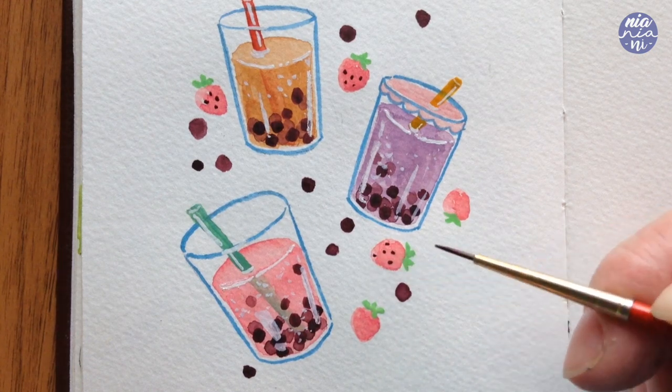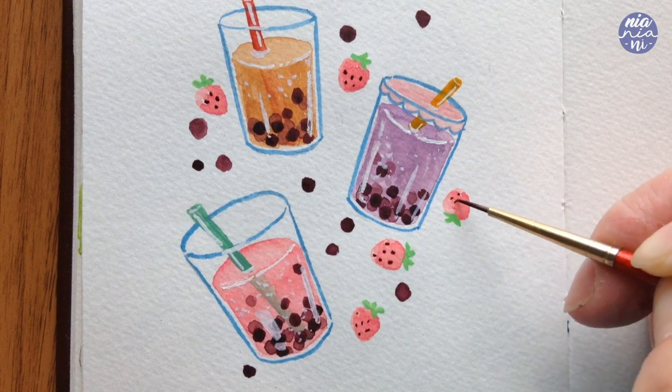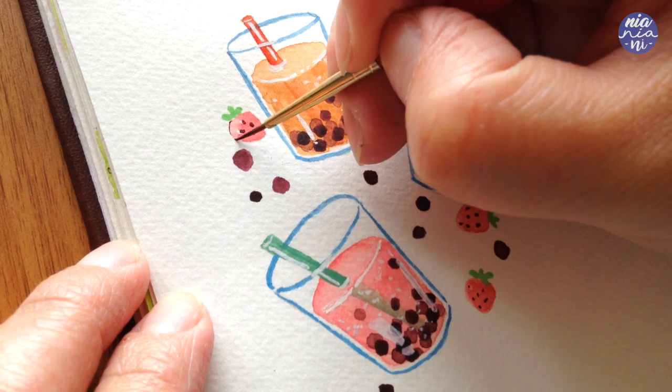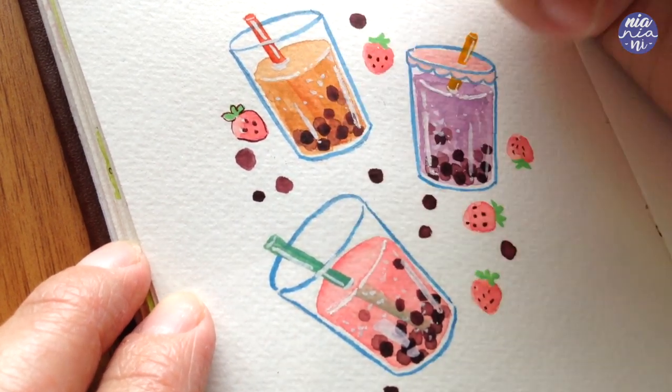After I started painting the seeds, I looked at it again and I see that the strawberry doesn't look as strong compared to the dark colors of the boba. So I ended up outlining all of the strawberries with the same colors so it balances out as a whole.